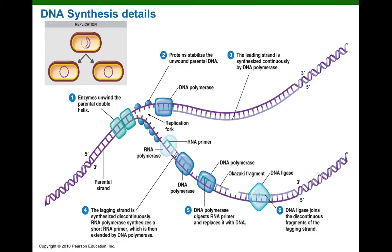The problem is that bacterial DNA polymerases require a short piece of nucleic acid — for example, a short piece of RNA called a primer — to get the new DNA synthesis started.